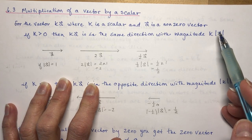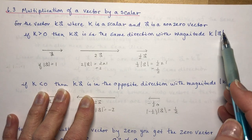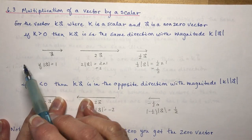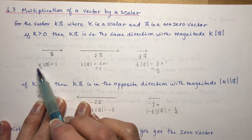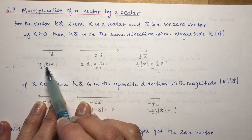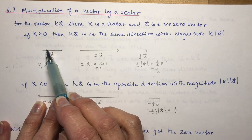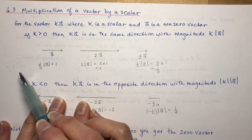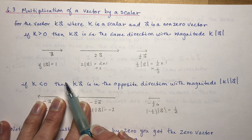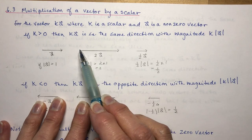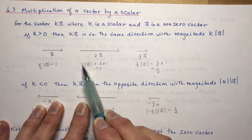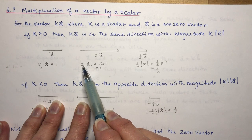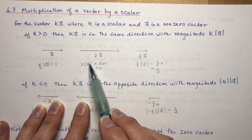Something people get confused with when they see these absolute value signs: this is a scalar. So if the magnitude of vector A is 1, I've drawn a vector with magnitude and direction. What's 2 times vector A? It's 2 times the length — that simple. 2 times the magnitude of A is 2 times 1, which is 2. So the magnitude of 2 vector A is 2.